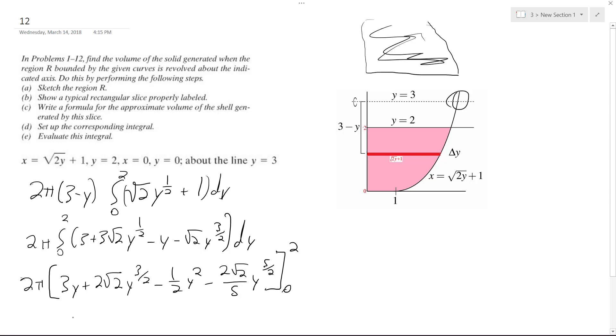All right. So furthermore, when we plug in 2, start with 2 and subtract when we plug in 0. What we end up with is quantity 2, 6 plus 8 minus 2 minus 16 fifths. And ultimately, what we end up with is 88 pi over 5 for the volume.